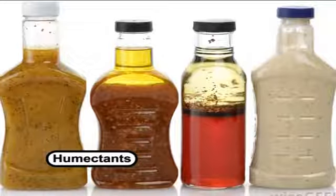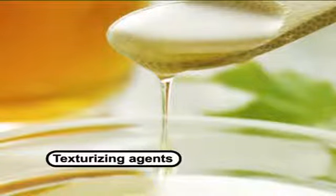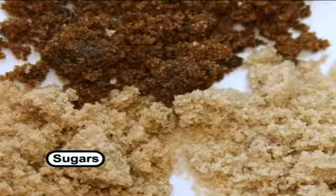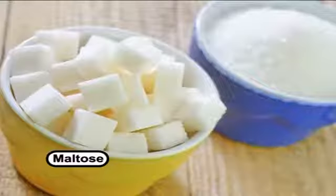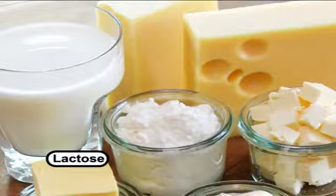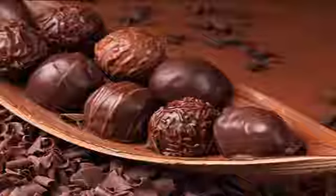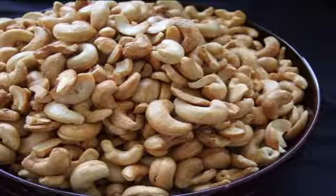Now let us look at the functions of sugars in foods. Sugars have numerous functions apart from their nutritive value — they function as humectants which absorb moisture from air, texturizing agents, flavor producing agents, and sweeteners. The hygroscopic nature of sugars and their mixtures is useful in food processing. Sugars such as maltose and lactose have limited water uptake and are used in confections and bakery toppings. The non-enzymatic browning reactions are responsible for the color and flavor of foods such as dates, honey, and chocolate, as well as the distinctive flavors of coffee beans, groundnuts, and cashew nuts.